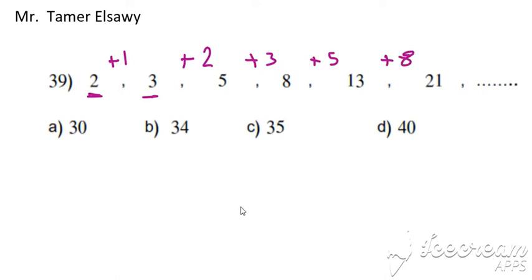Good. Find the difference: 1, 2, 3, 5, 8. What is the strategy? One, two, three, five, eight. One plus two is three, two plus three is five, three plus five is eight, five plus eight is thirteen.